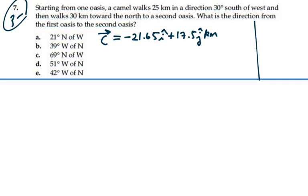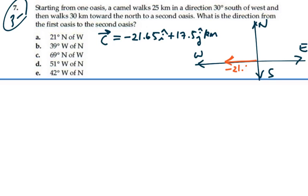So it kind of looked like this. As we were looking north, east, and west, and south, if we went negative 21.65 in the i direction, and then we went positive 17.5 in the j direction, that would give our resultant vector C as we went from one oasis to the next.